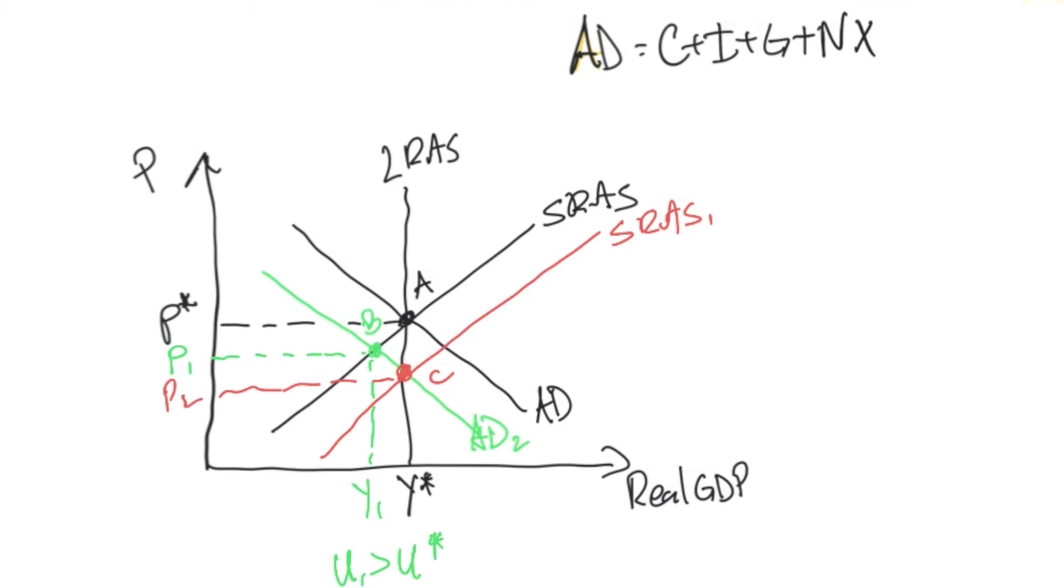And now our equilibrium is at point C. What happened to price levels? Well, they fell further to P2. This is what happens when all prices in the economy are able to adjust. So the move from P to P1 was only some of the prices adjusting.